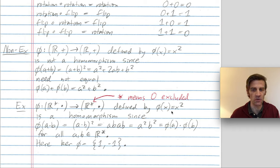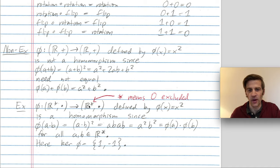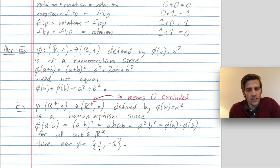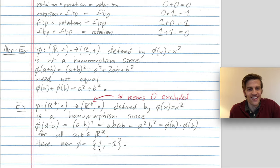The kernel of this homomorphism is all things that map to the multiplicative identity, which is 1. So the kernel is the set containing 1 and -1, the numbers whose square is 1. Thanks for your attention — that's a brief introduction to homomorphisms. Homomorphisms generalize isomorphisms; many books introduce homomorphisms before isomorphisms, but our book does isomorphisms first, and now we get to play with this more general concept.